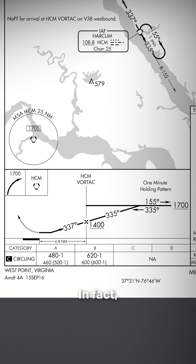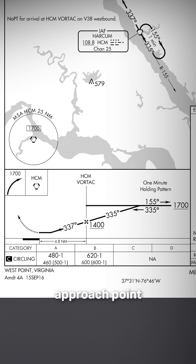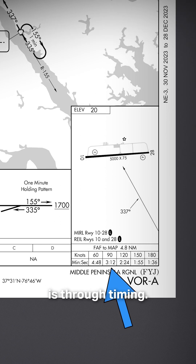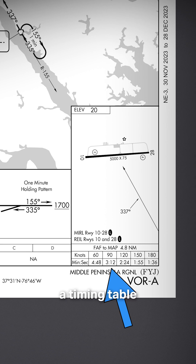In fact, without RNAV, the only way we could identify that missed approach point for this procedure is through timing, and the FAA has given us a timing table to help us out.